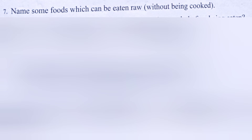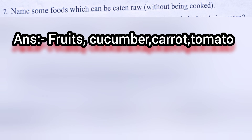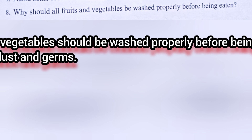Question seven: Name some foods which can be eaten raw without being cooked. The answer is fruits, cucumber, carrot, and tomato. Question eight: Why should all fruits and vegetables be washed properly before being eaten? To free them from dust and germs. That completes worksheet number one.